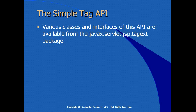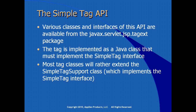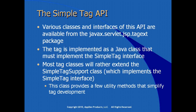The Simple Tag API consists of classes and interfaces available from the package javax.servlet.jsp.tagext. Your custom tag is implemented as a normal Java class, but it must implement the SimpleTag interface. Most developers would prefer to extend the class SimpleTagSupport, which provides the core implementation of the SimpleTag interface and gives a few other features, including utility methods that help simplify the implementation of tag code.